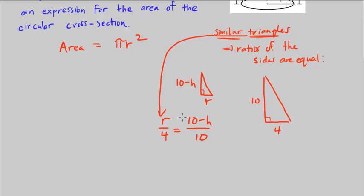So we can go ahead and solve this expression for r. We multiply 4 to both sides, these cancel out, and we're left with r is equal to 10 minus h in parentheses, because this would have to distribute, times 4 over 10.